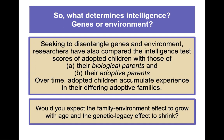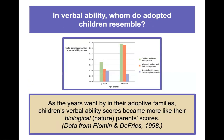What these studies have shown over time is fascinating. Adopted children accumulate experience in their differing adoptive families, and you might think that children would start to appear more like their adoptive parents in terms of intelligence over time. Would you expect the family environment effect to grow with age and the genetic legacy effect to shrink? That's what most people would expect. But that isn't what we found in verbal ability. As the years went by in their adoptive families, children's verbal ability scores became more like their biological parents' scores — you can see that in the visual here.